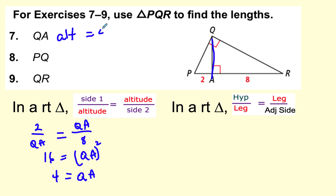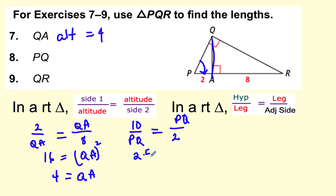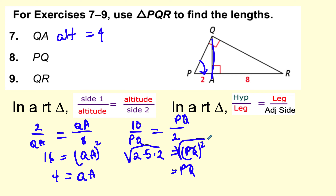Now PQ is a leg, so I use the leg formula. PQ is the geometric mean between the whole hypotenuse, which is 10, and the adjacent side, which is 2. So 10 times 2 equals PQ squared. That's 2 times 5 times 2, which equals 20. Taking the square root, the perfect square 4 comes out, giving PQ equals 2√5.